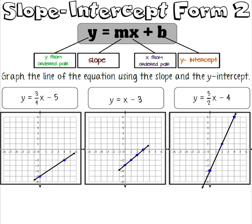Let's look at these lines. For y equals three fourths x minus five, the y-intercept is at negative five with a slope of positive three fourths — up three over four. We can only fit two points on the graph even if we reverse, so that is our graph. For y equals x minus three, the y-intercept is at negative three; remember there is a 1 in front of x, so slope is one over one — up one over one repeatedly. For y equals five halves x minus four, y-intercept is negative four — up five over two, repeated. Make sure you have these lines accurate on your notes.